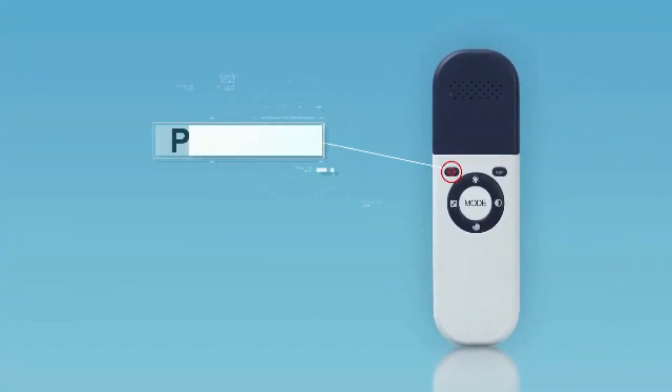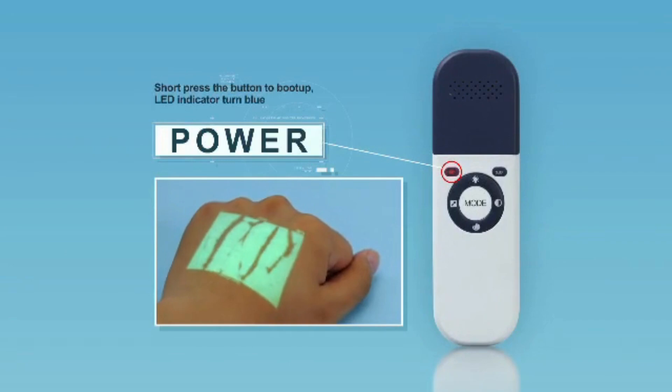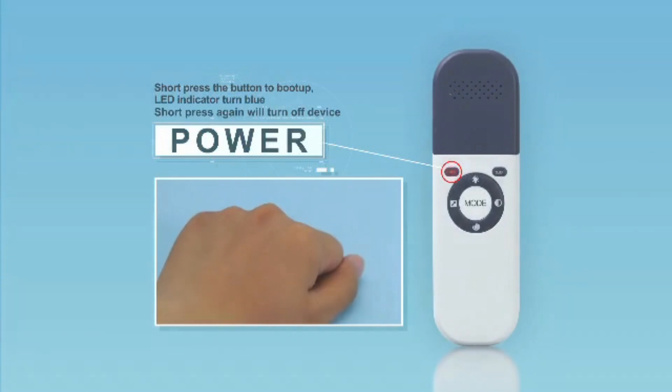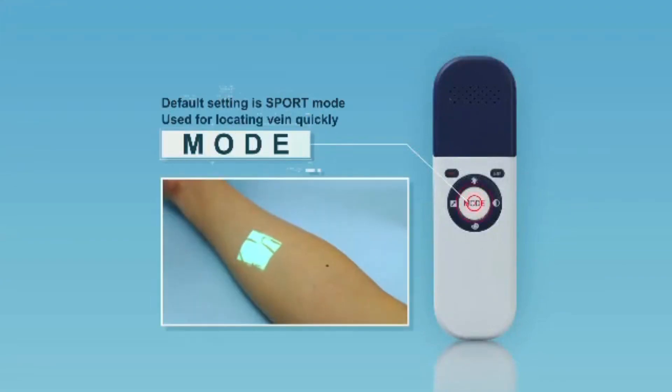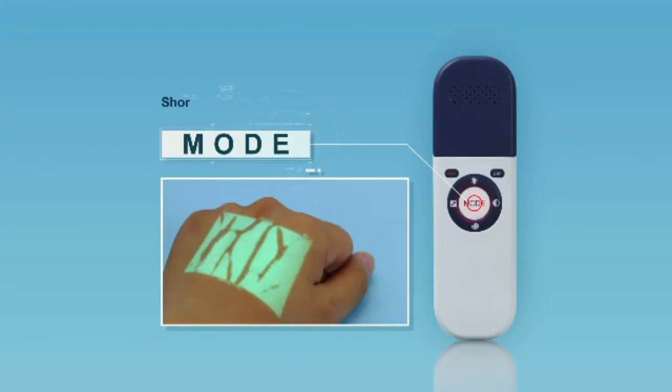To power on VeinFinder, short press the power button. Short press again to turn the device off. Two display modes include sport and enhance. Default setting is sport mode for locating veins quickly. Short press mode button to switch to enhance mode, which is used for viewing finer image details of smaller and deeper veins, especially for pediatrics, obese patients, and edema patients.